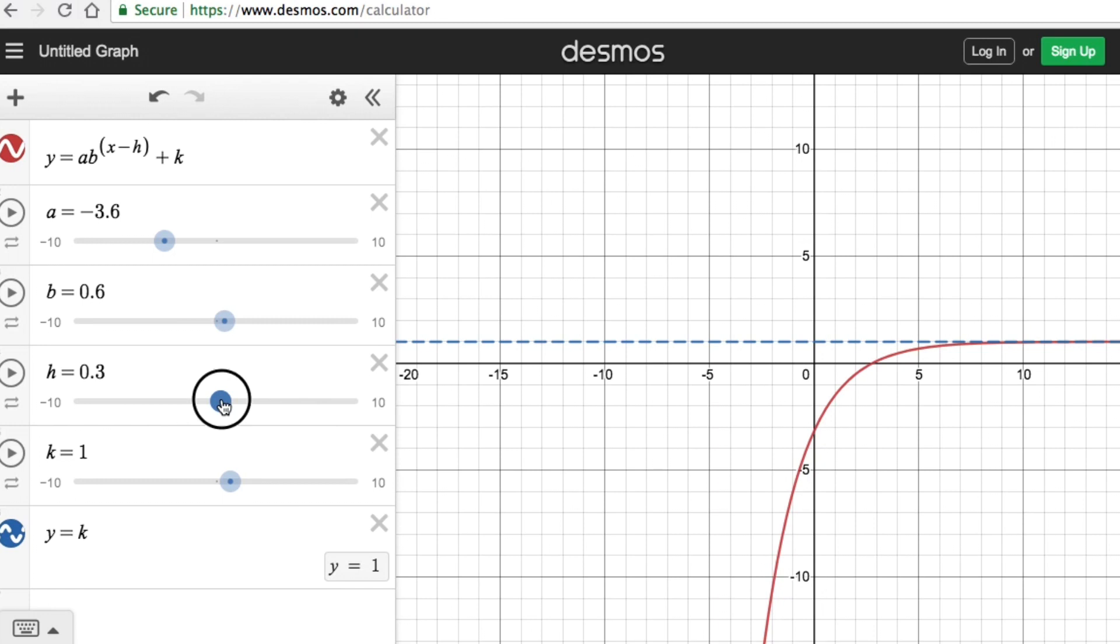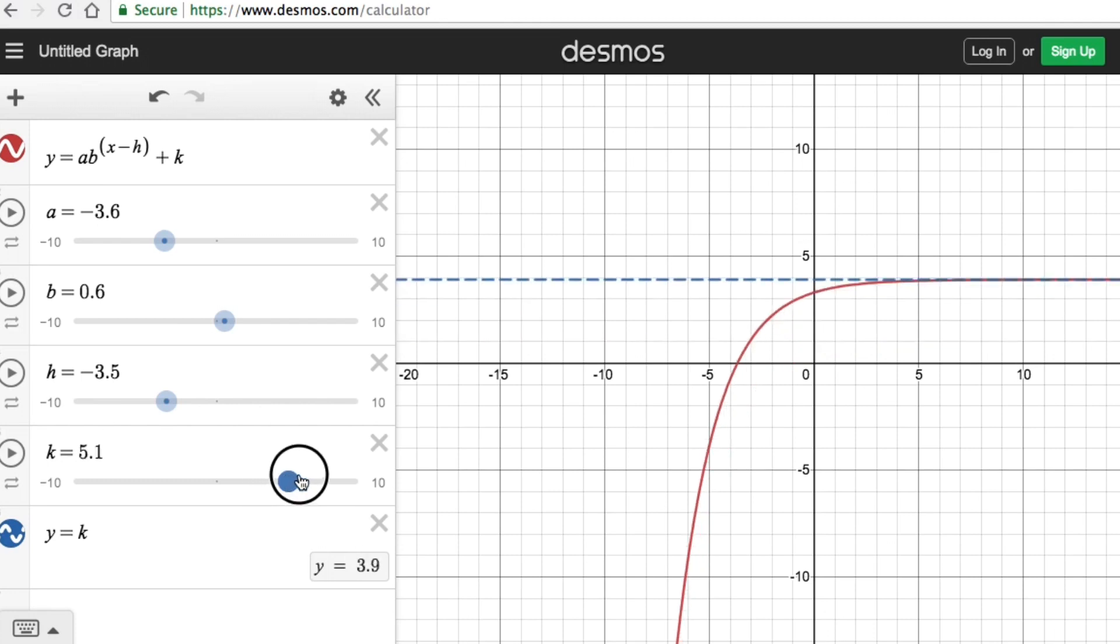Now let's look at h. The h moves the graph left or right while the k moves the graph up or down.